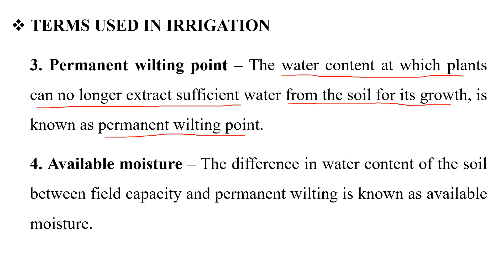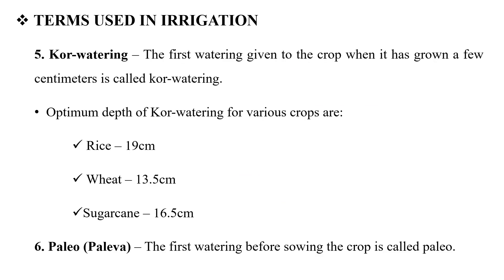Available moisture is the difference in water content of the soil between field capacity and permanent wilting point, and this is known as available moisture content. The next term is kor watering. The first watering given to the crop when it has grown to a few centimeters is called kor watering.